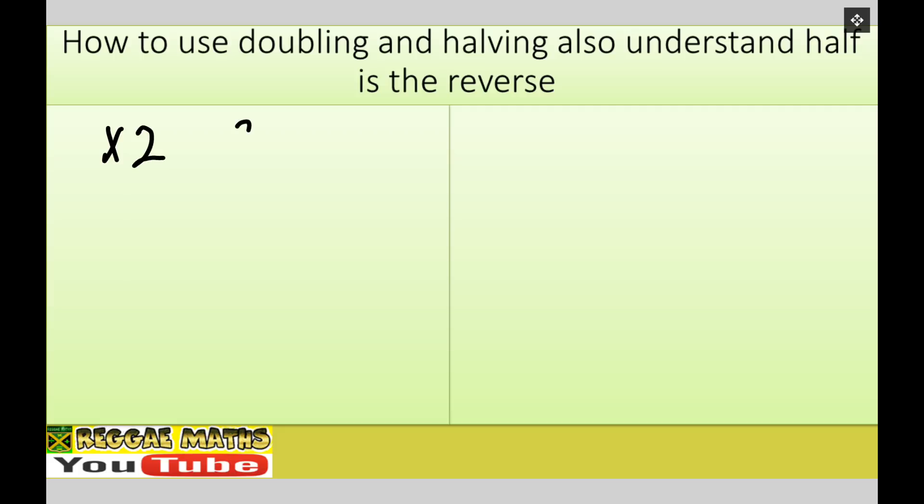So basically I got, you know, two times one is two, two times two is four, then I got two times four is eight.